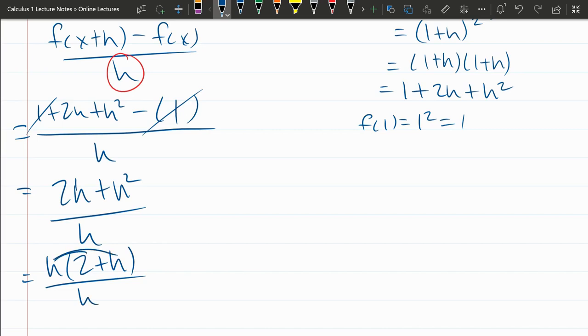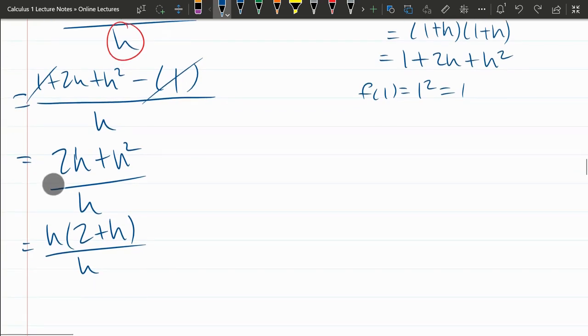Now I'm multiplying by h here and dividing by h. So now this multiply by h cancels the divide by h, and I'm left with 2 plus h.